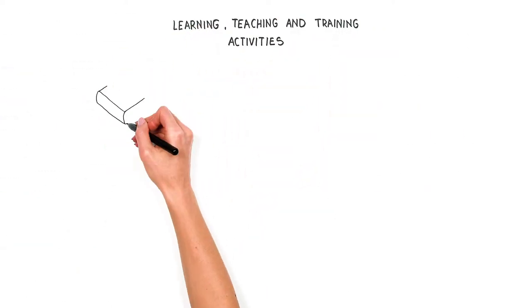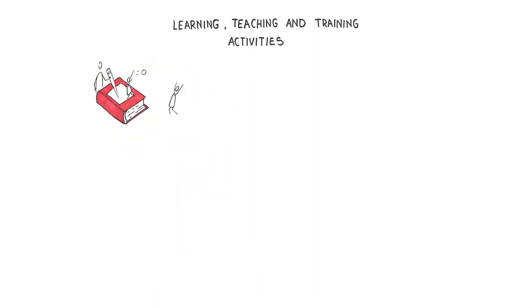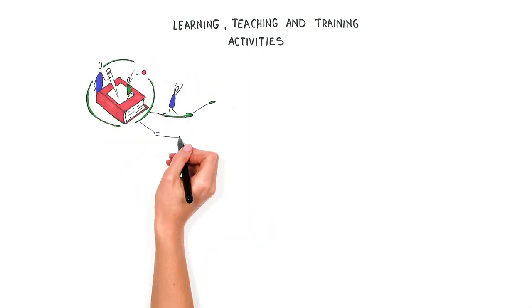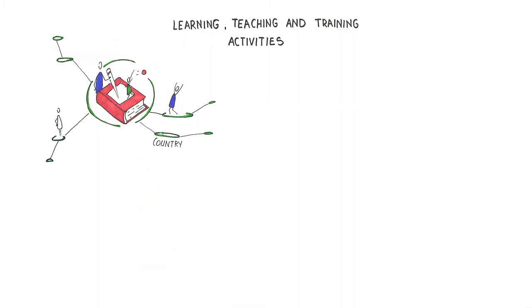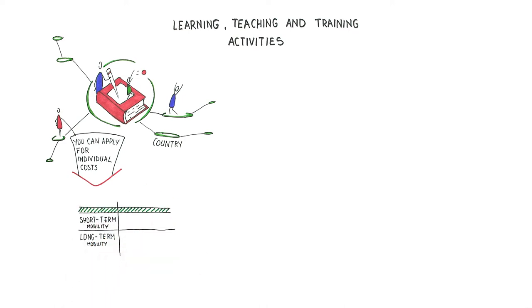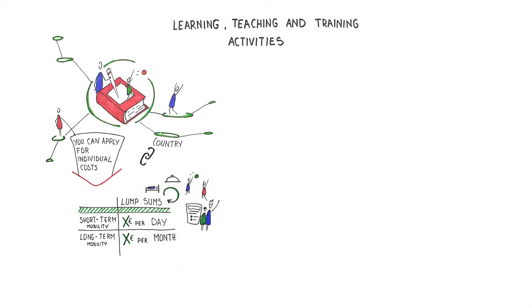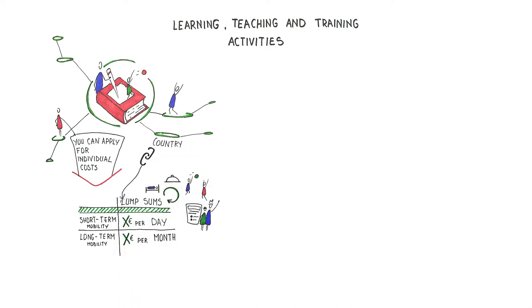Learning, teaching, and training activities: for learning activities like blended learning, training, and job shadowing, you can apply for individual support and travel costs for all participants and trainers from partners of the project. Individual costs are lump sums per day for a short-term mobility and per month for a long-term mobility. Lump sums cover all costs related to lodging, food, training, program, and experts. The lump sums depend on the country where the activity takes place.